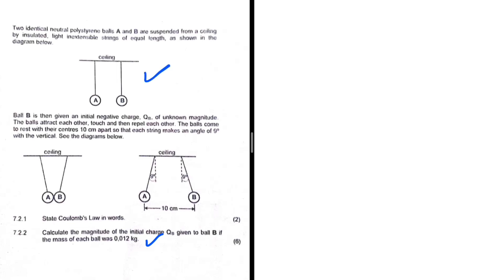The two identical neutral spheres are suspended by two strings of equal length. Ball B is then given an initial negative charge qb of unknown magnitude. So initially they are neutral, and now B is given a negative charge of unknown magnitude — A is still neutral and B is negatively charged.